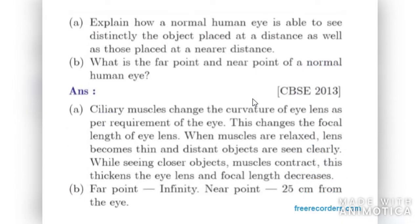Next: explain how a normal human eye is able to see distinctly the objects placed at a distance as well as those placed at a nearer distance. The ciliary muscles can change the curvature of eye lens and therefore it changes the focal length of the eye lens. When muscles are relaxed, lens becomes thin and distant objects are seen clearly. While seeing closer objects, muscles contract. This thickens the eye lens and the focal length decreases. Therefore, the normal eye can see distant objects and nearer objects.